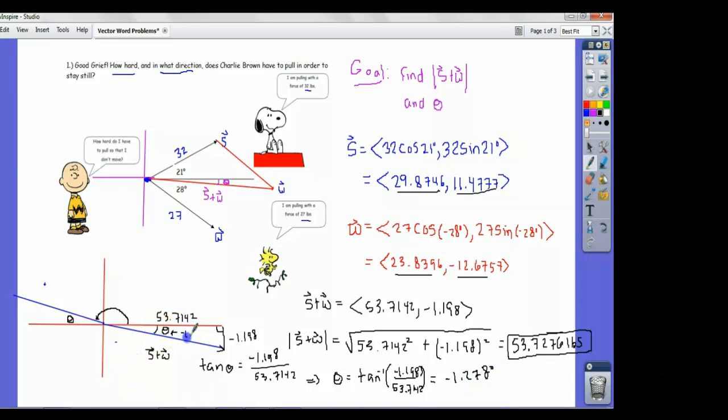That gives negative 1.278 degrees. So that's this angle here, which means that this angle is 1.278 degrees. If we want this one to really describe the direction he needs to pull, you need to do 180 degrees minus 1.278 degrees and that equals 178.722 degrees. So he needs to pull 53.7276 pounds at an angle of 178.722 degrees.